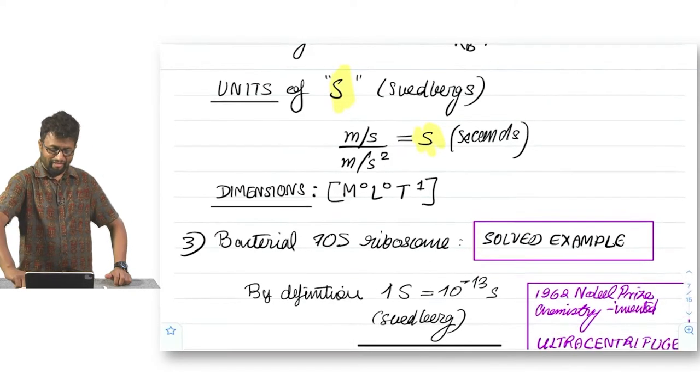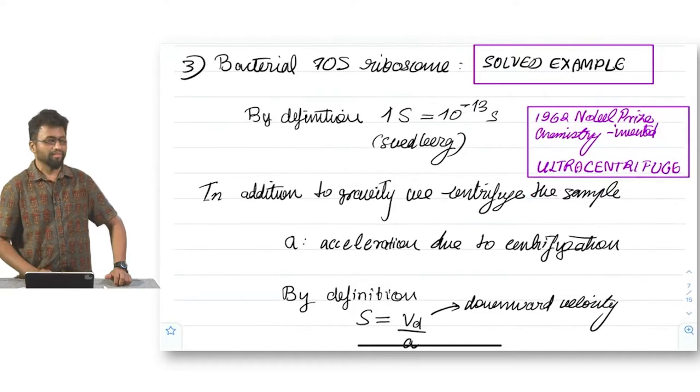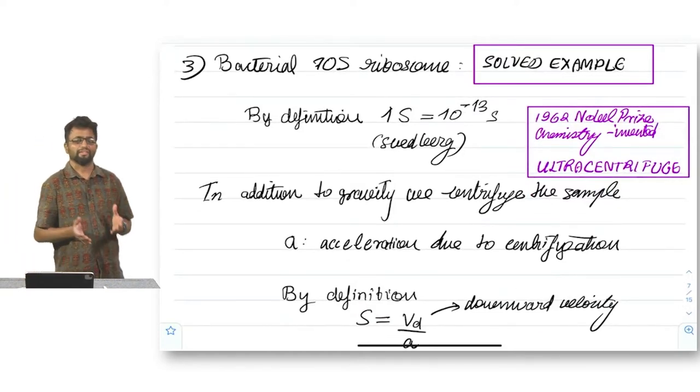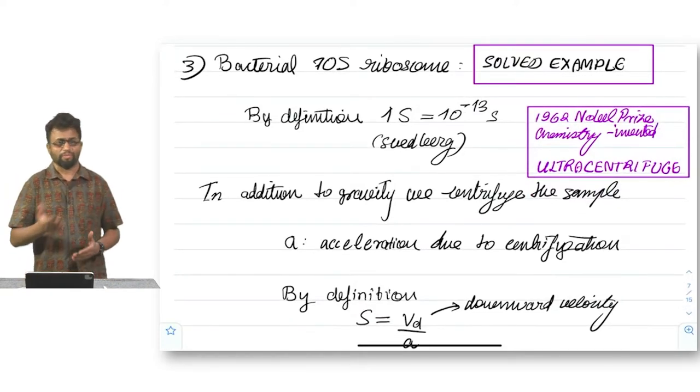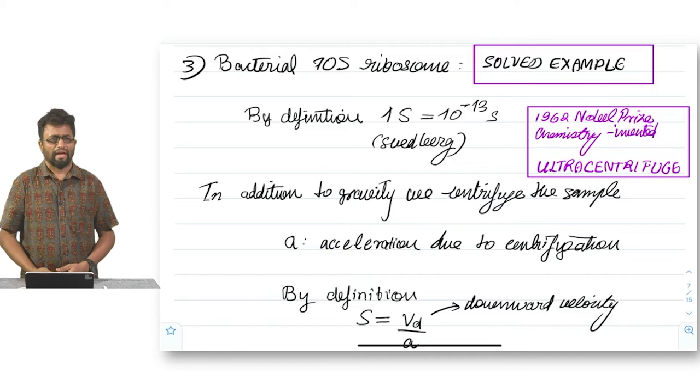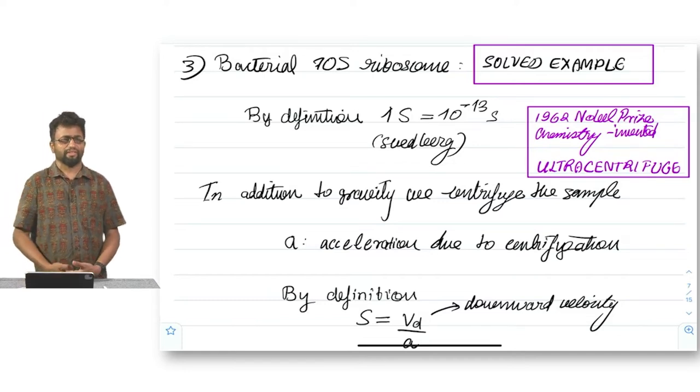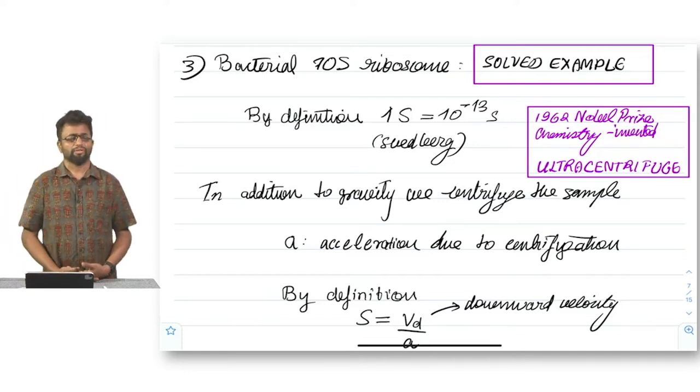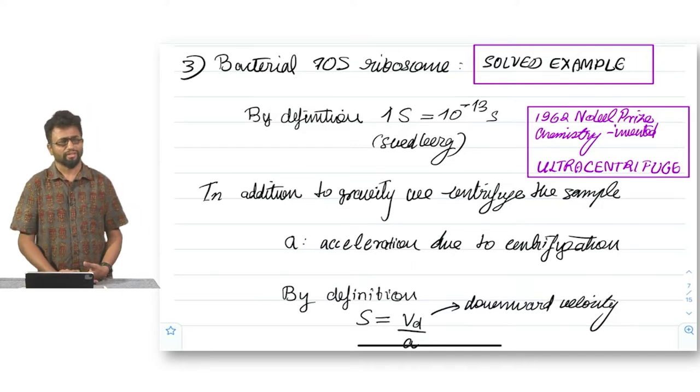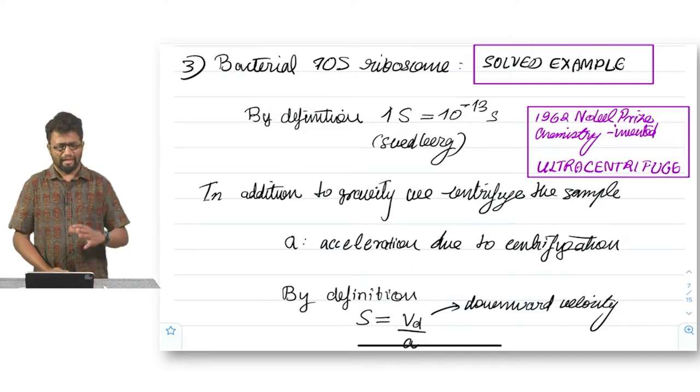Now, the bacterial 70S ribosome unit is something you have all read in your biology textbooks, maybe even in high school. Since many of you may be attracted to structural biophysics and may have heard about the work of Ada Yonath and Venki Ramakrishnan, you at least have read about this subunit.